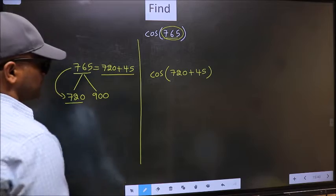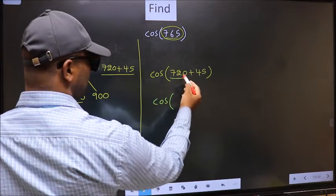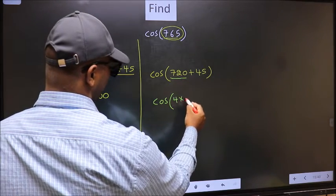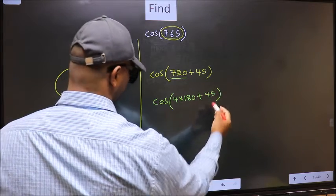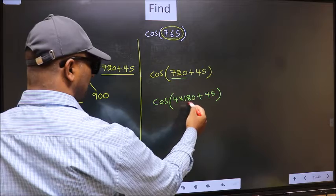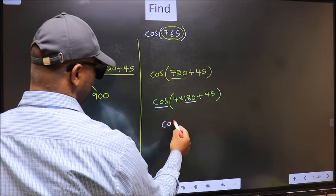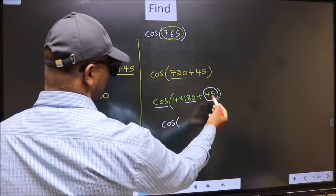Next, cos - in place of 720, now we should write 4 into 180 plus 45. Here we have 180, so cos is not going to change. It will remain cos, and inside we get this angle 45.